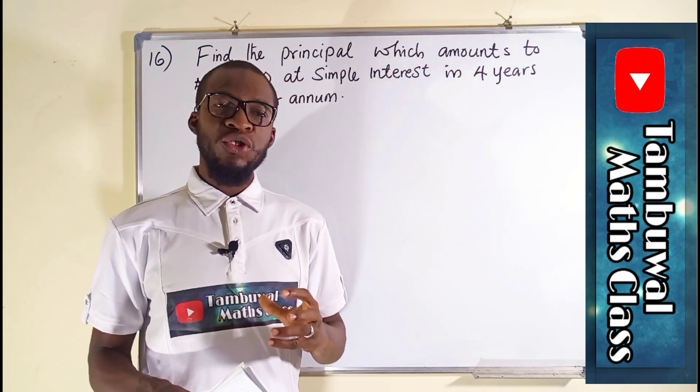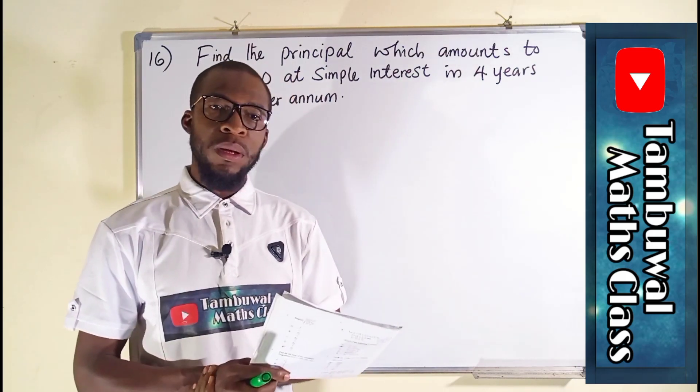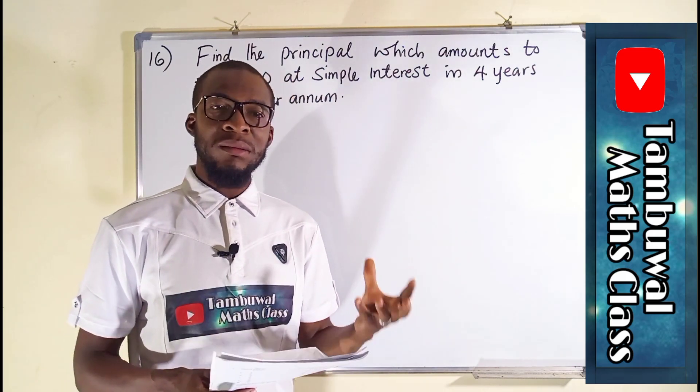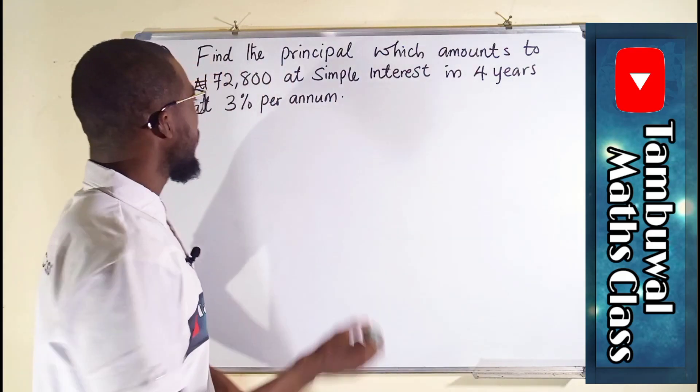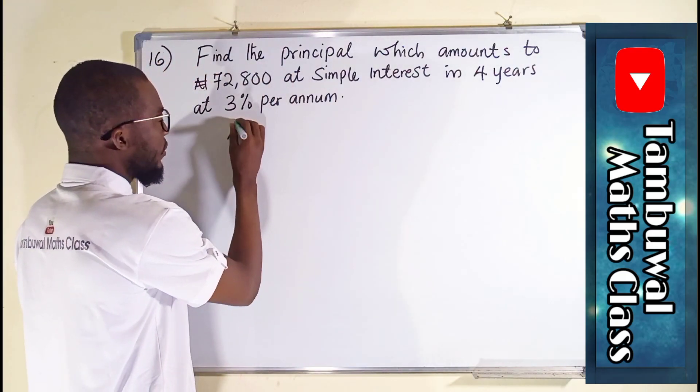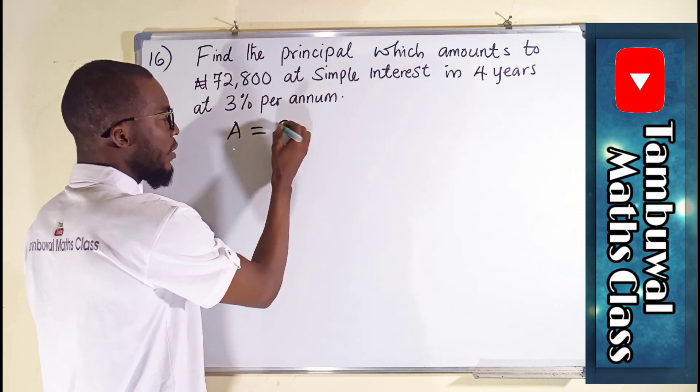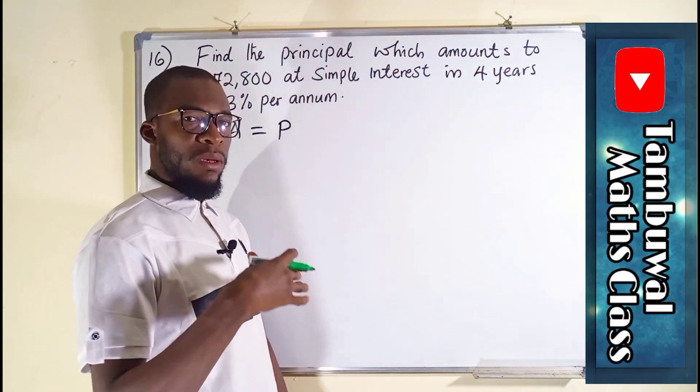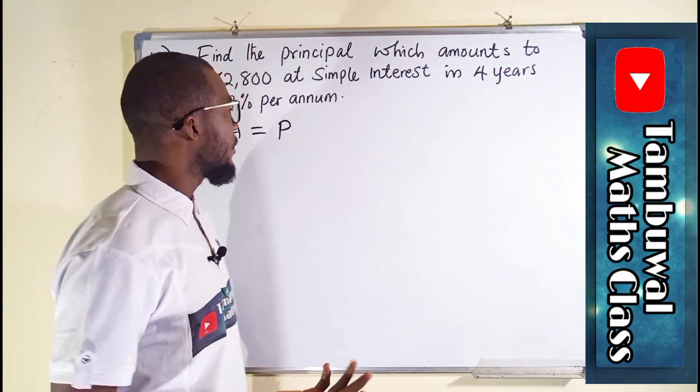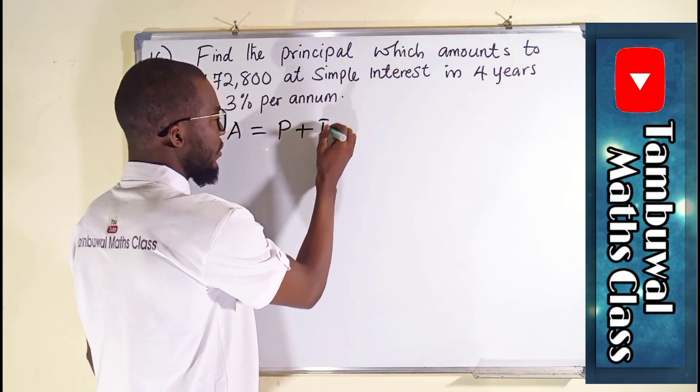Principal is actually that amount you use in investment while expecting interest in return. So in simple interest, amount is equal to the principal which is the money you deposited or you use in a particular investment plus the interest you are expecting in the end.